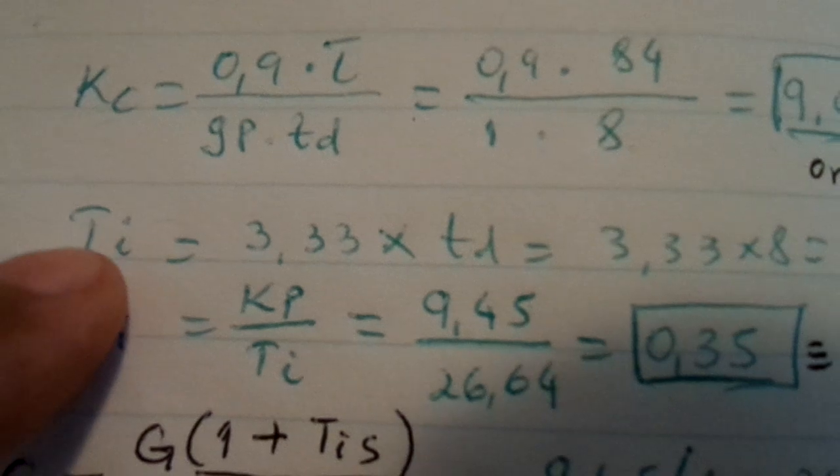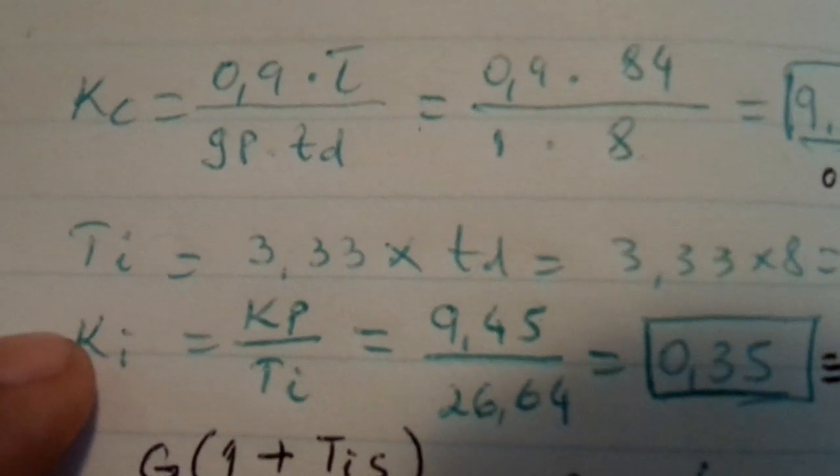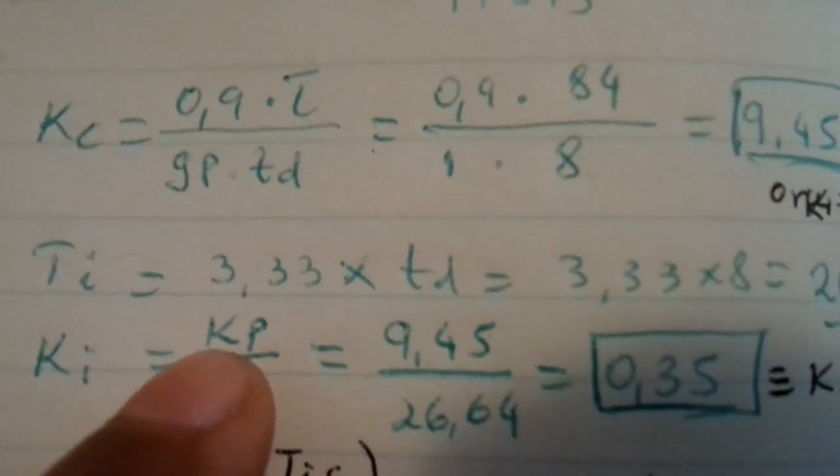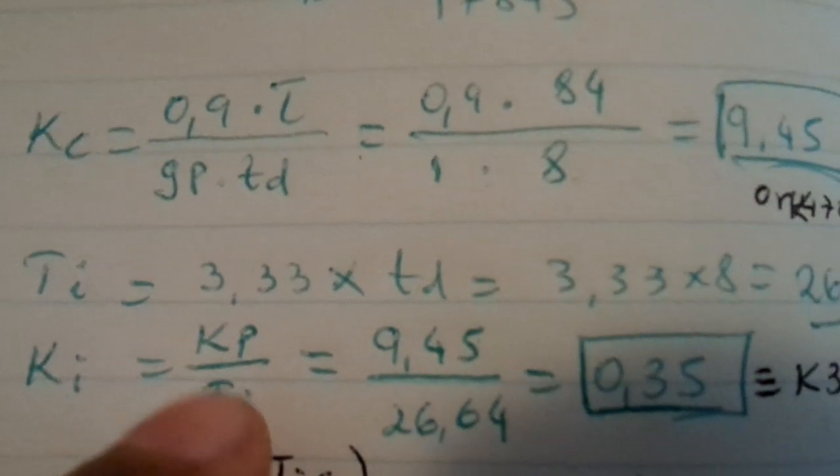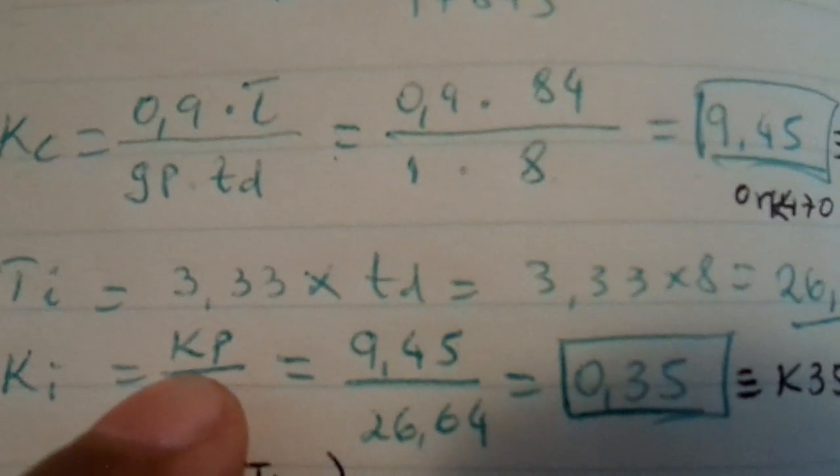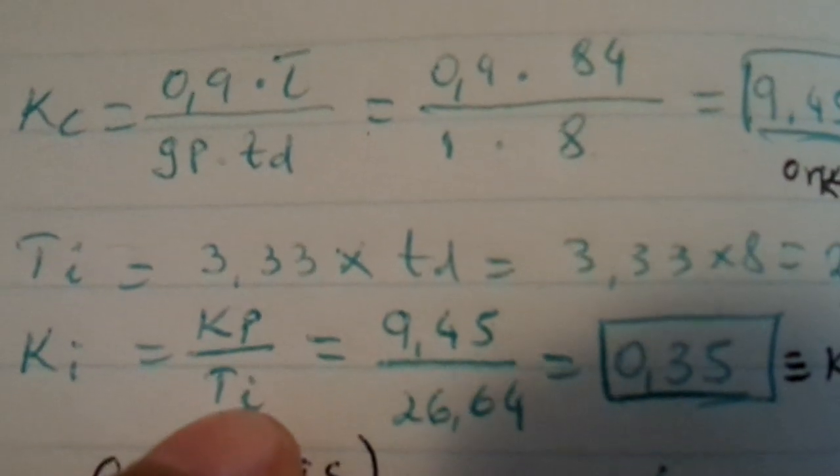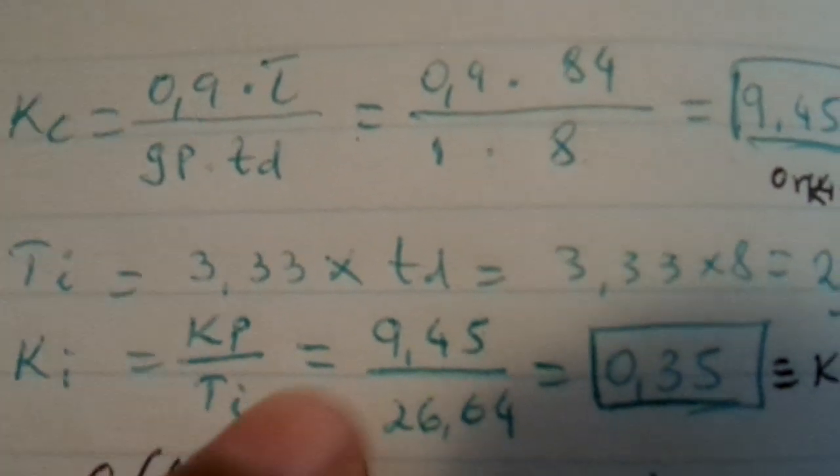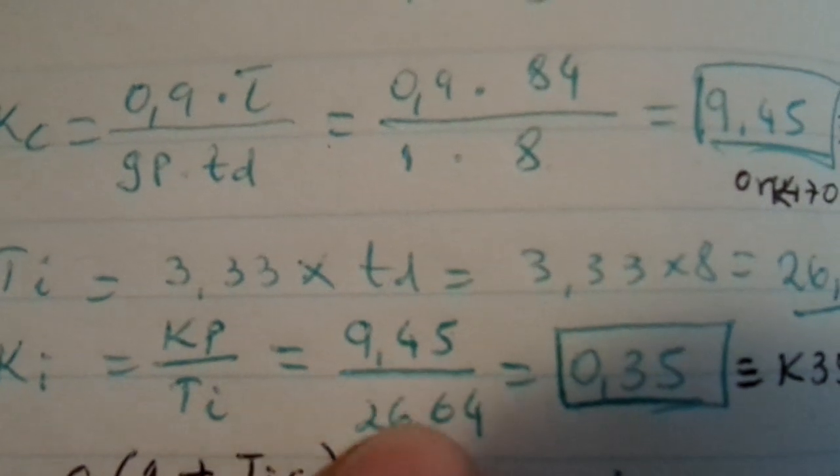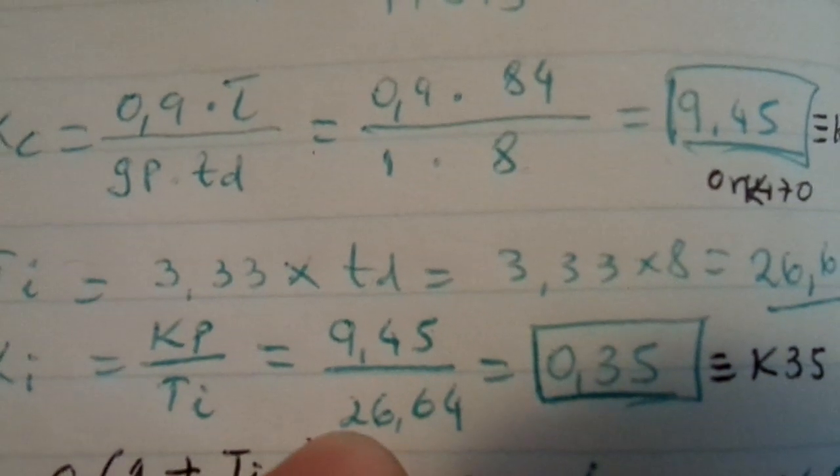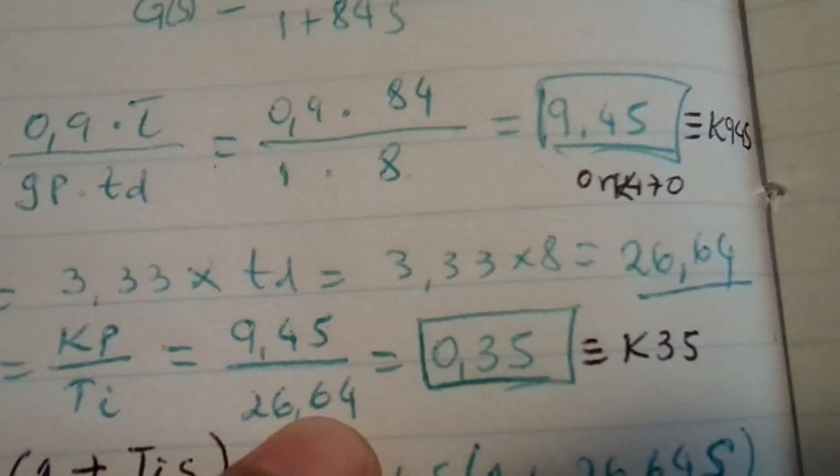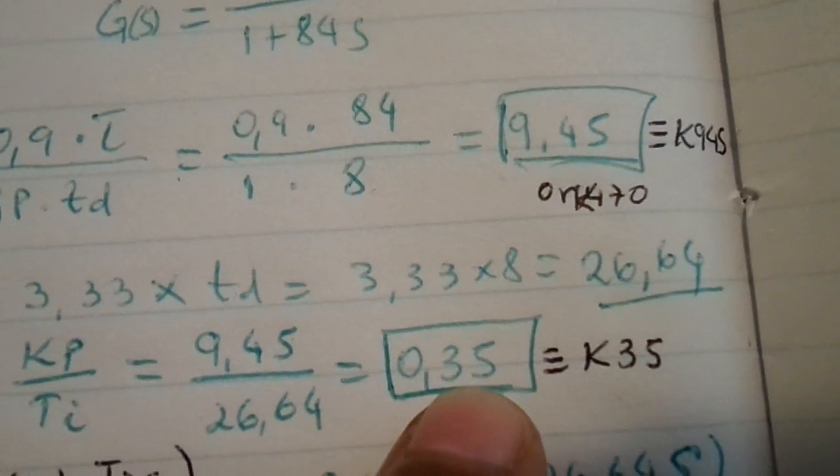So now, that's integral time. For me to find the integral gain, that will be according to the same Ziegler-Nichols: the controller gain over integral time. That's 9.45 over 26.64, and I got 0.35.